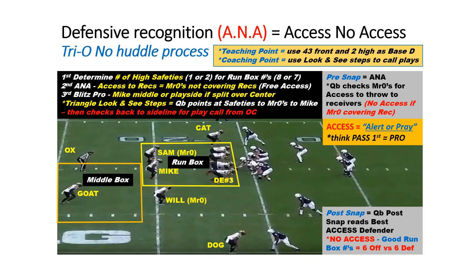The reason we install this first is it is the foundation of the whole TRIO no-huddle process. We've got to do this defensive recognition every time — what we call ANA: access, no access. We're going to start by determining the number of high safeties, and that will let us know potential run box defenders. From there, we'll go down to those hanging linebackers — in this diagram you'll see the Sam and the Will, what we call Mr. Zeros.